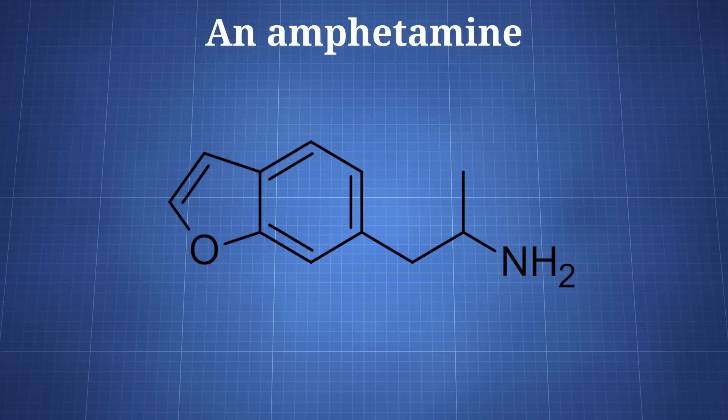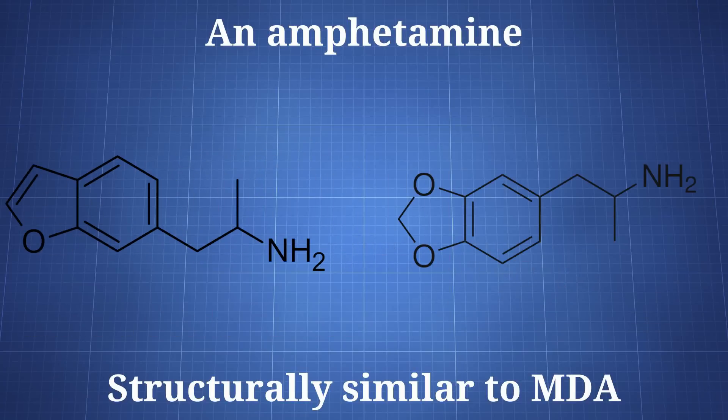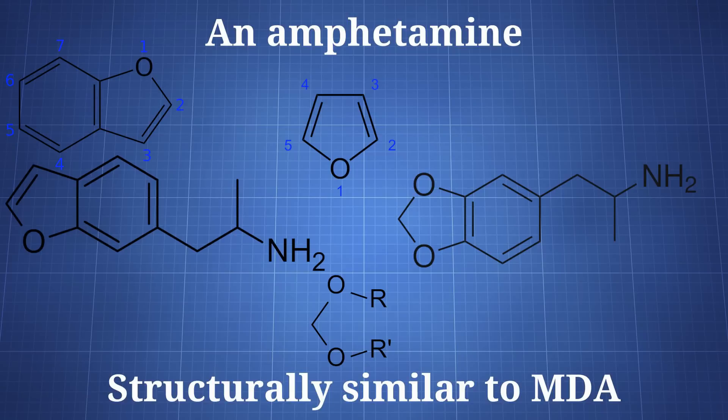6-APB is a phenethylamine and amphetamine that's structurally similar to MDA. A furan ring has replaced MDA's methylene-dioxy functional group, resulting in a benzofuran group.